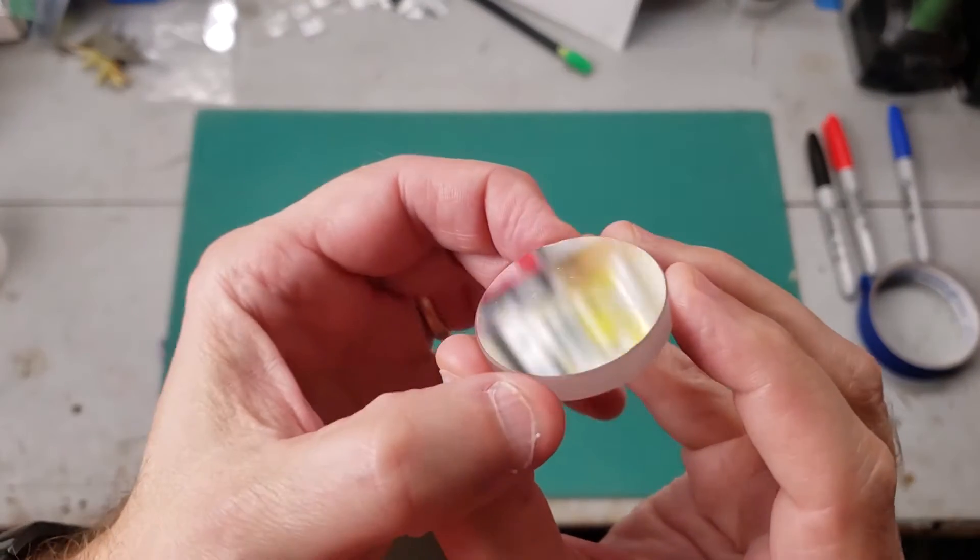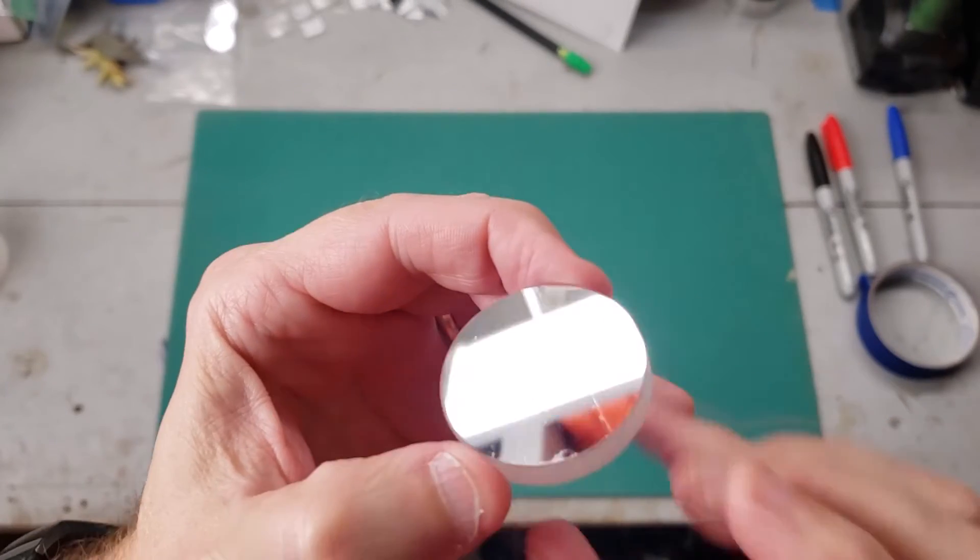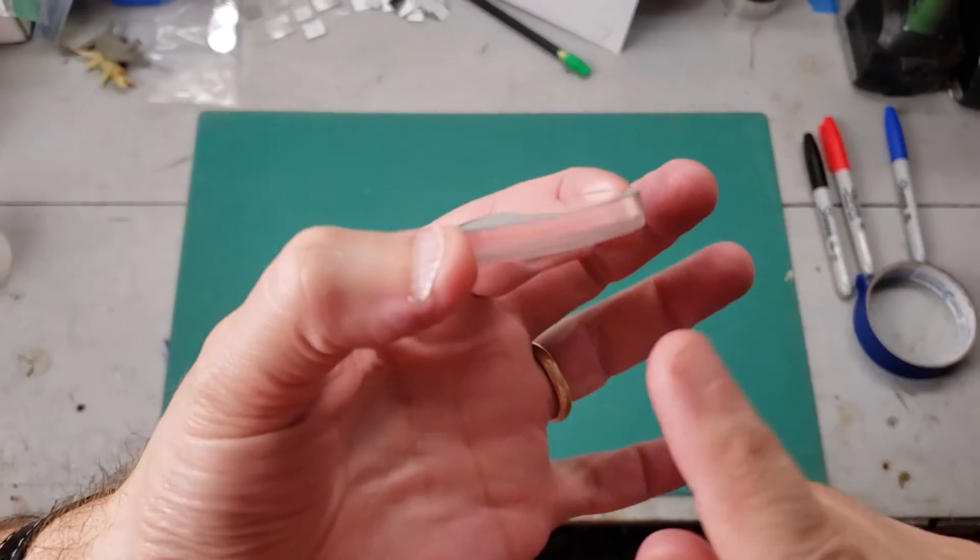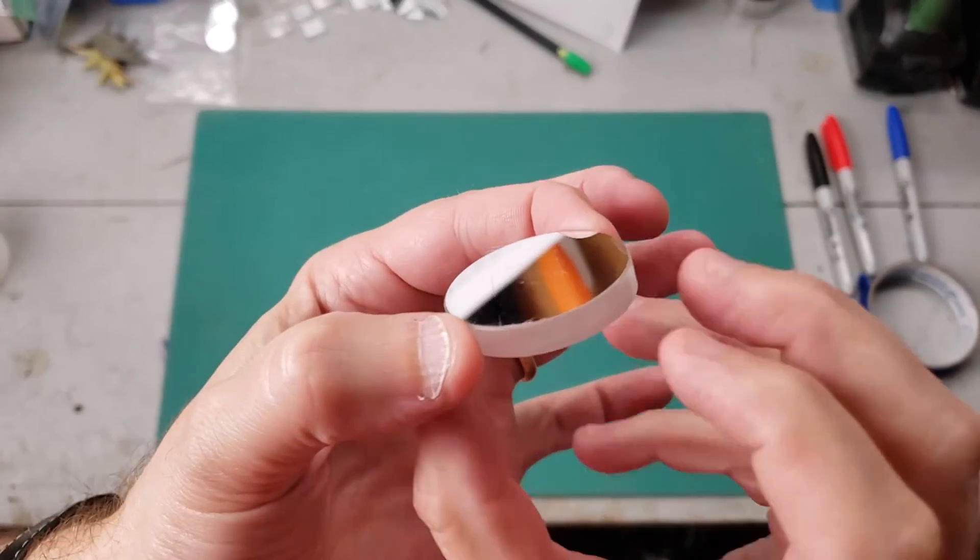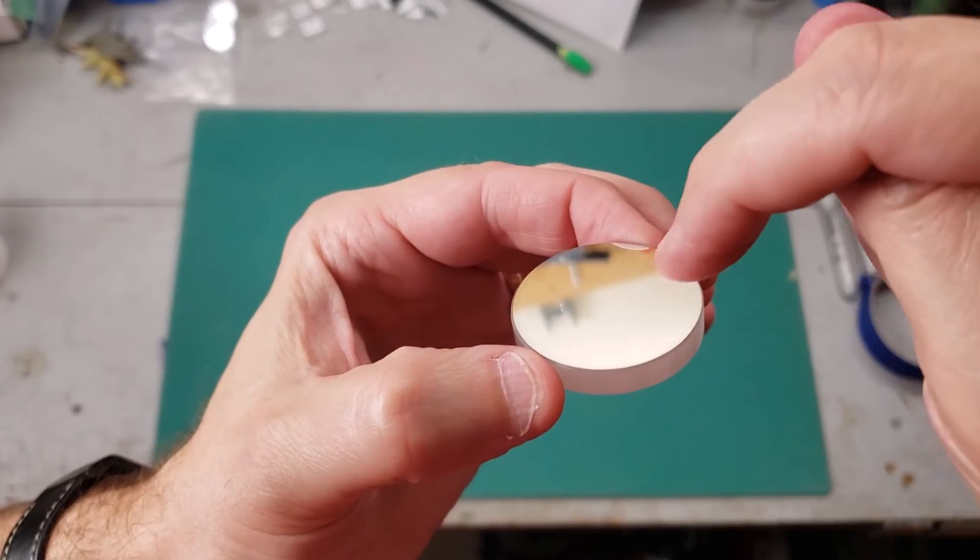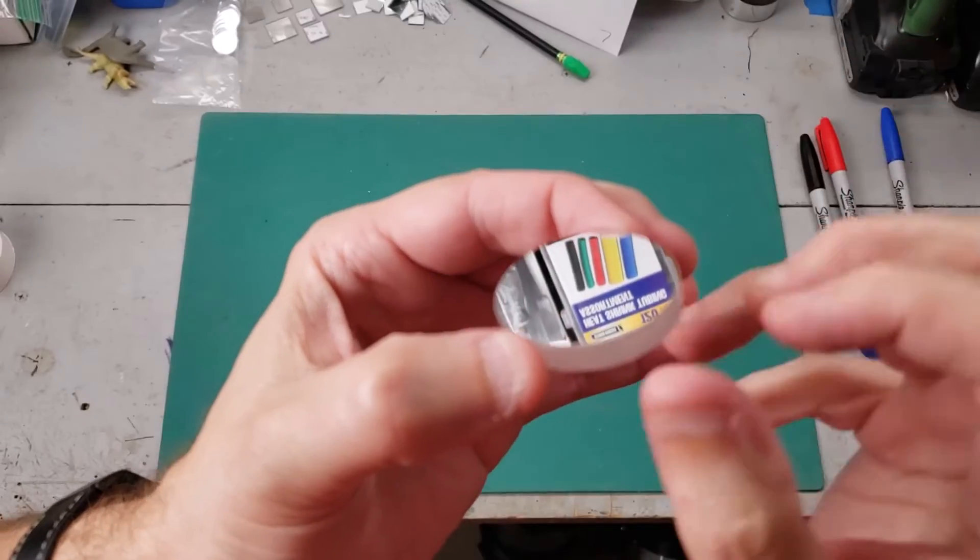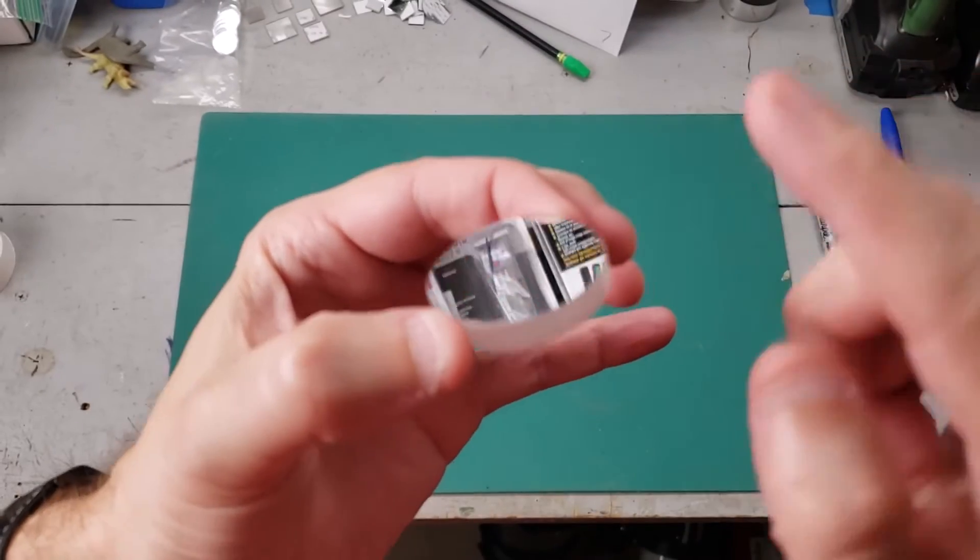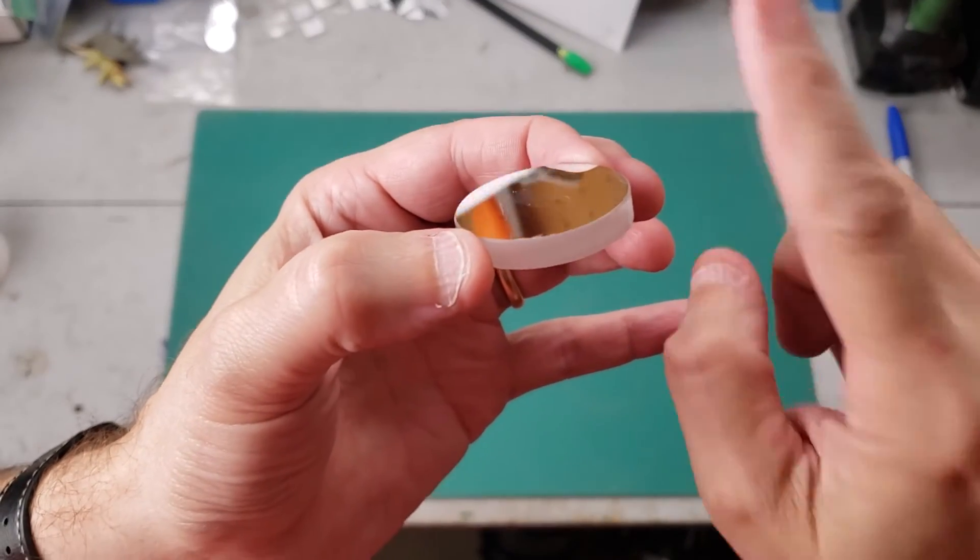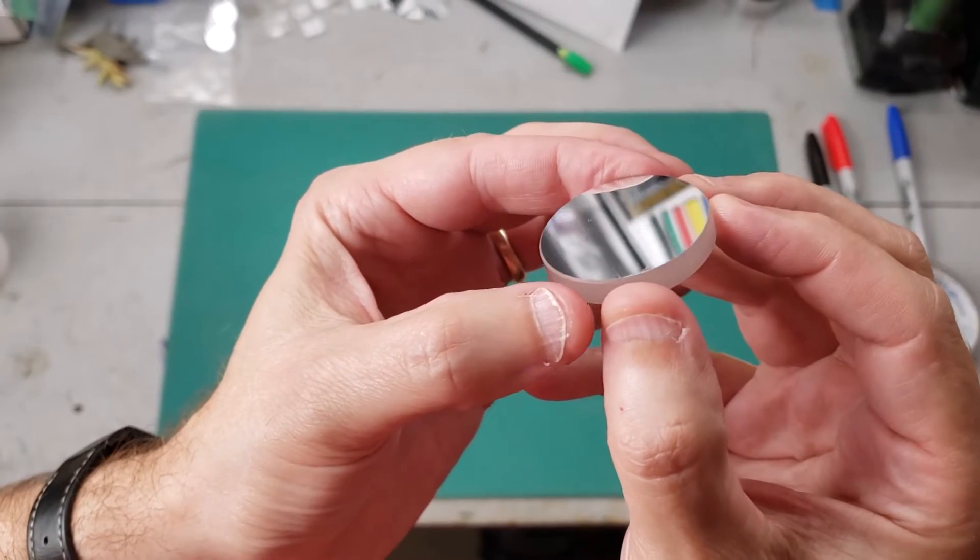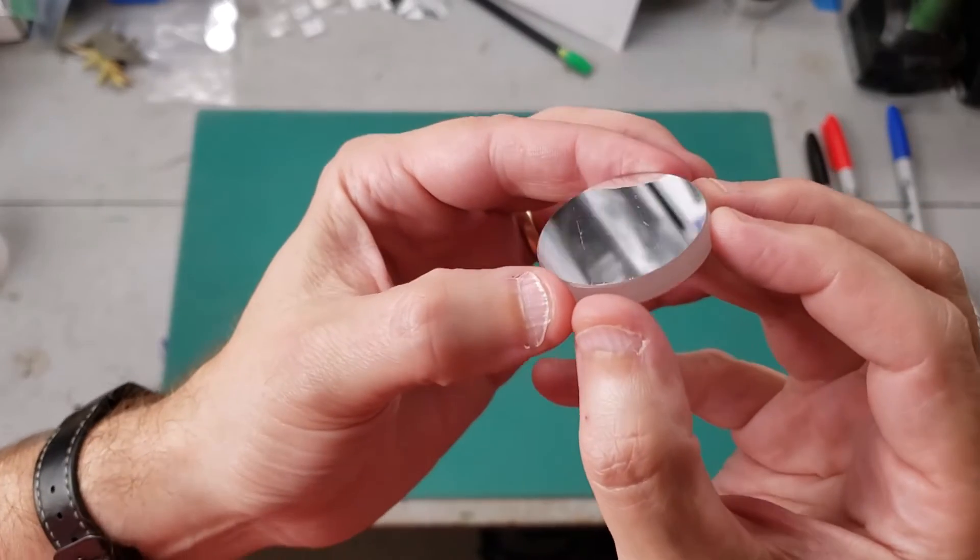The mirror that I'm using is a first surface mirror. First surface means that the reflective layer is actually on the front of the glass and not the back like you would see in a common household mirror. The main advantage is that the light coming in bounces immediately off the reflective surface. It doesn't have to go through an eighth of an inch of glass before it hits the reflective layer and then bounce back through another eighth of an inch of glass. That would cause some refraction and might cause some issues with the light. You can buy these online.